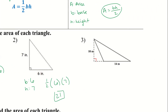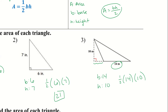For number 3, we have an extended base — that does not count as our base, so we don't need to figure out that value. The base is just 14, and the height of the triangle is 10. So we have one-half times the base times the height, and plugging that into a calculator we get 70.